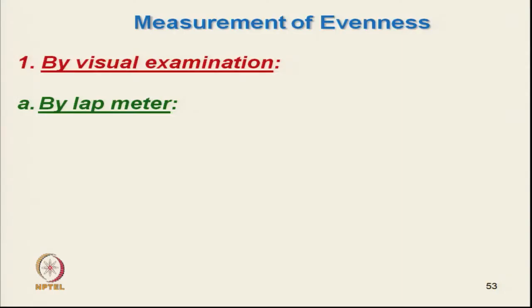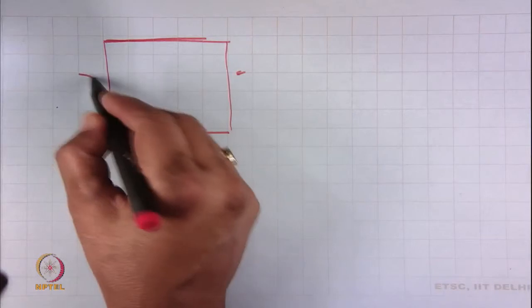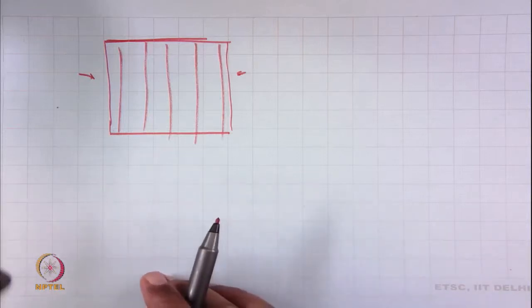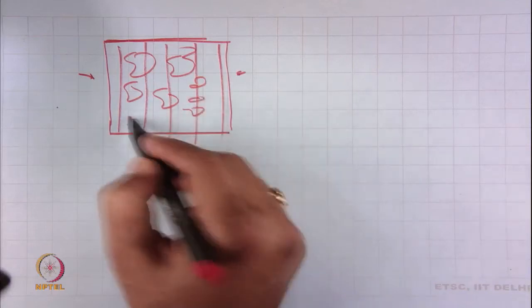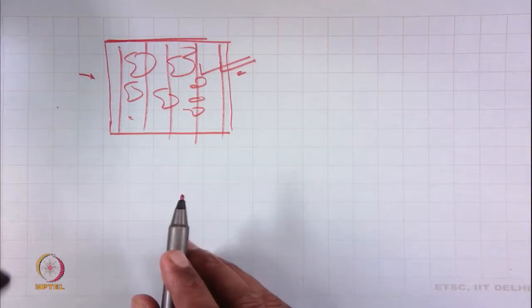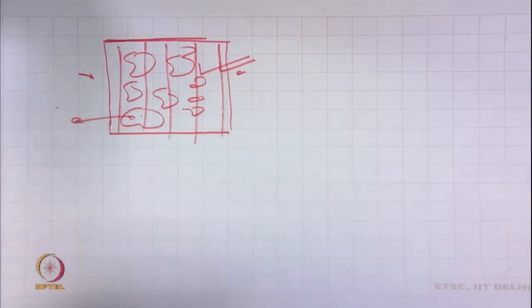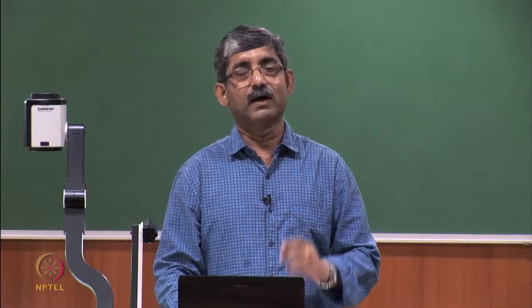One instrument is the lap meter. Here there is a board which is illuminated with light from the back side — an illuminating board — and over that we place our laps. Although laps are nowadays not being used in the industry, in case of any unevenness or patchiness, it can show it and give a direct indication whether this is going to create a problem. So the lap meter is one technique for measurement of evenness of lap by visual technique.